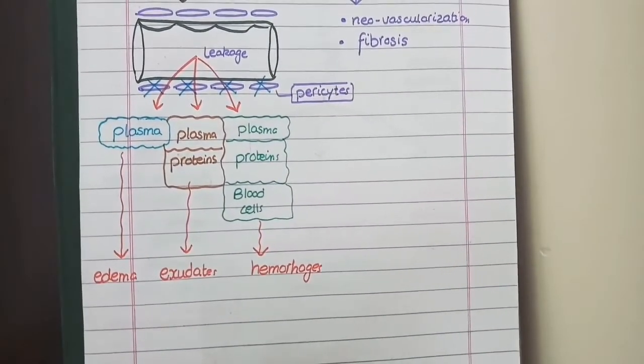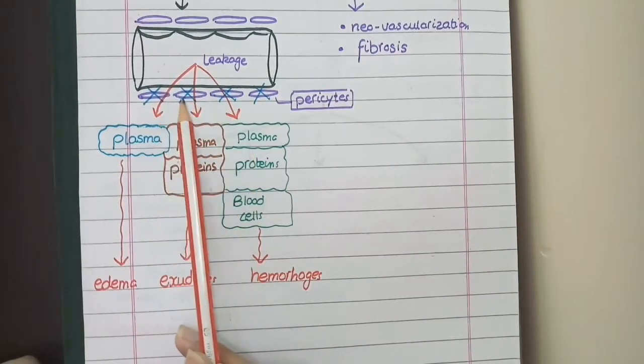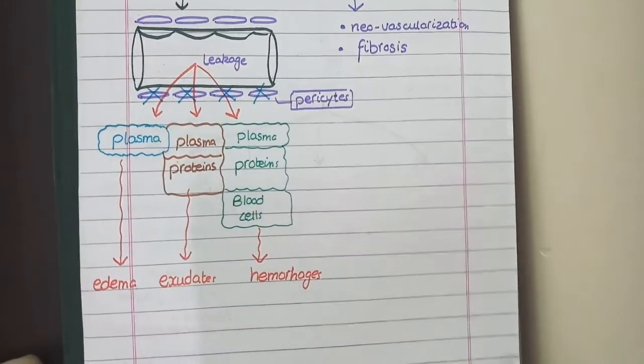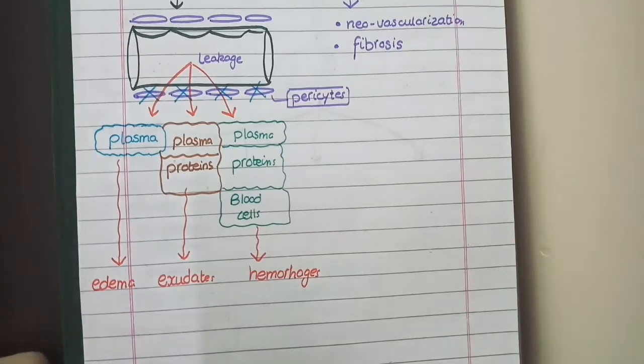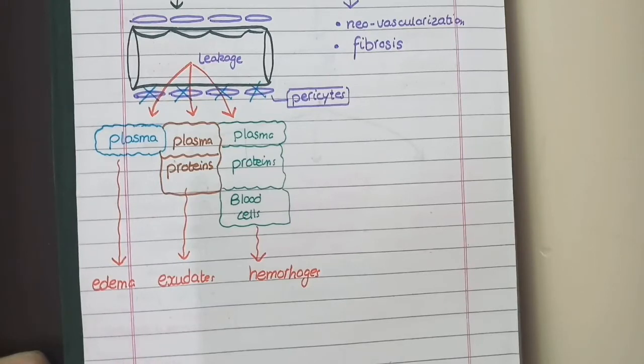Basically, these changes occur when diabetes damages the coat of pericytes surrounding the endothelial cells of capillaries. This makes the capillaries leaky. When blood plasma starts leaking out, we will see edema. But if the leakage is slightly more, then along with plasma, even the plasma proteins will leak out and we will see this as exudate. And if the leakage is so severe that along with plasma and plasma proteins, even blood cells leak out, we call this as hemorrhage. So in non-proliferative changes, you see edema, exudates, and hemorrhages.